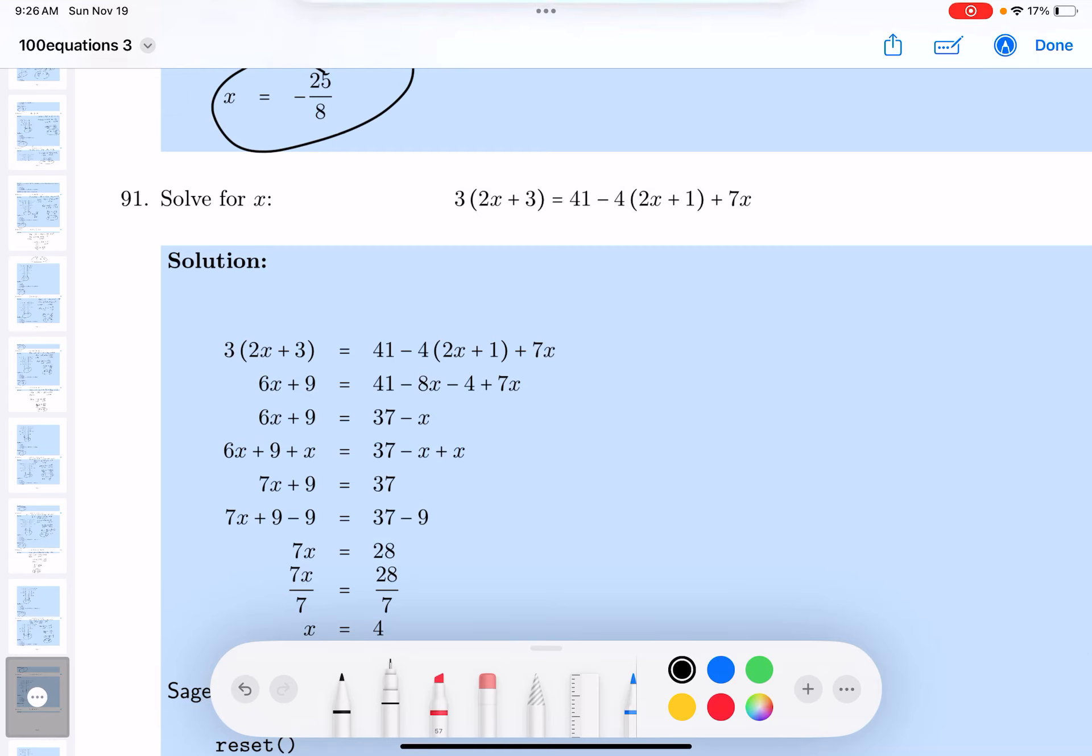All right, let's take a look at it. Again, you have to remove those grouping symbols, and 3 times 2 is 6x. 3 times 3 is 9.